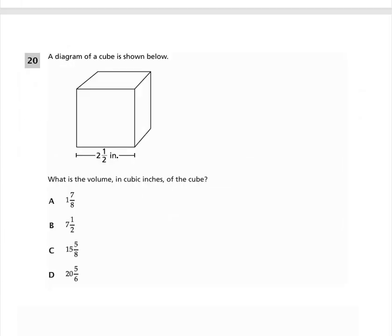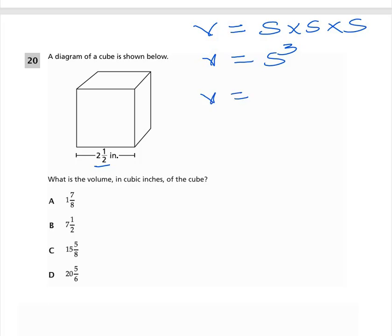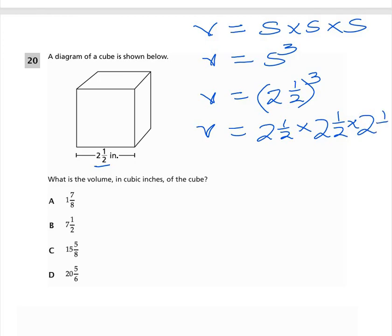Question 20 says: a diagram of a cube is shown below. What is the volume in cubic inches of the cube? The volume of a cube is side times side times side, or side cubed. The side here is 2 and 1/2 inches. So the volume will be 2 and 1/2 cubed, which means 2½ times 2½ times 2½.